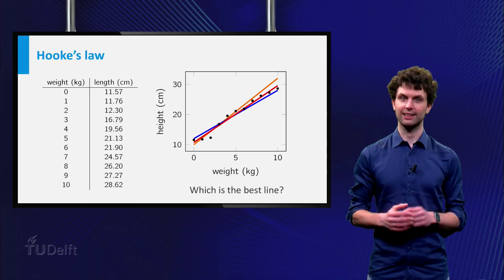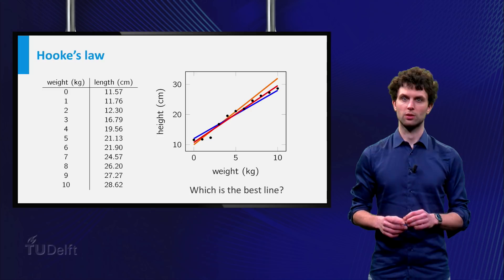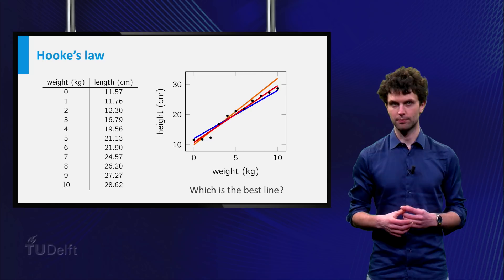Well, we need a criterion, and the criterion we use is the so-called least squares method, which minimizes the squares of the vertical distances between the points and the straight line.